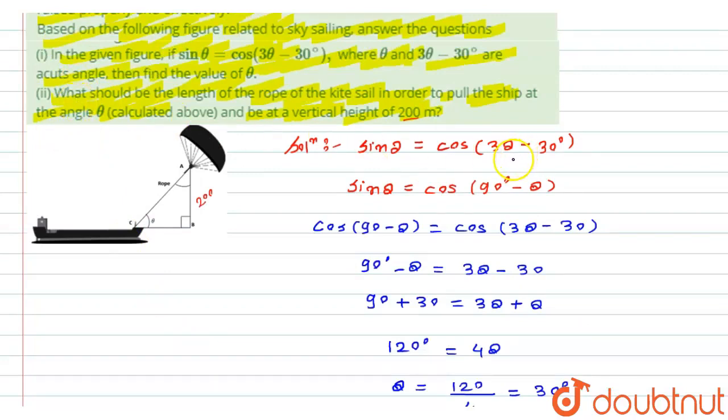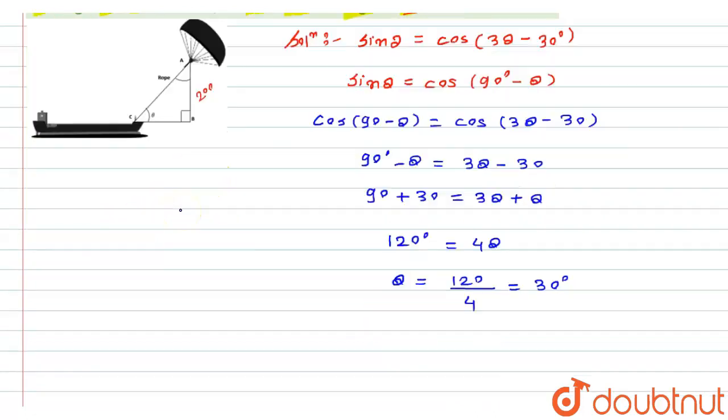Now, for the second question, we need to calculate the length of the rope, which is the length of AC. This length AB is given as 200 meters, and this angle is known as 30°, which we just calculated. So I can calculate the length of AC using sin θ.